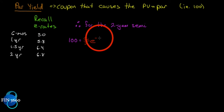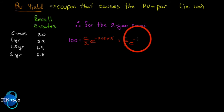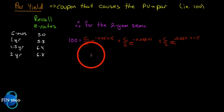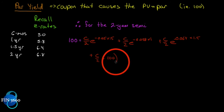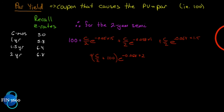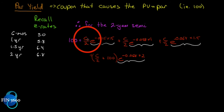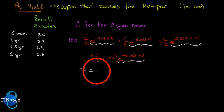So: 100 = (C/2)·e^(−0.05×0.5) + (C/2)·e^(−0.058×1) + (C/2)·e^(−0.064×1.5) + (C/2 + 100)·e^(−0.068×2). You can isolate C after solving each constant term. You will find that C equals 6.87.